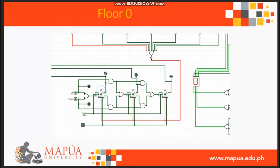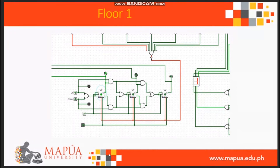It will display the number 0 if the output of the flip-flops is binary 000, which indicates floor 0 or the ground floor. It will display 1 if the output of the flip-flop is 001, which indicates the first floor.